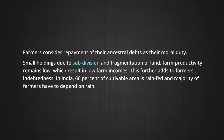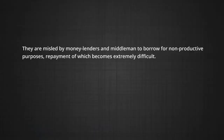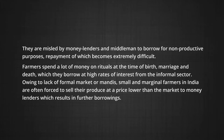In India, 66 percent of cultivable area is rain-fed, and the majority of farmers depend on rain. Uncertainty in rain is reflected in uncertainty of income, which leads to frequent and regular requirement of loans. A large portion of Indian farmers are illiterate; they are misled by moneylenders and middlemen to borrow for non-productive purposes, repayment of which becomes extremely difficult. Farmers spend a lot of money on rituals at the time of birth, marriage, and death, which they borrow at high rates of interest from the informal sector.